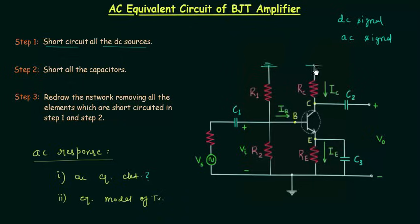We already know the potential of ground is equal to zero volts. So we have zero volts at this terminal and zero volts at this terminal. We are done with step number one.